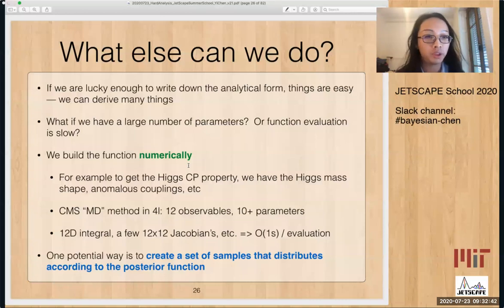For example, if you want to measure the Higgs spin CP property, then we have a lot of parameters to go in. We have the mass, the width, and all the anomalous couplings that we want to get to. And CMS has a MD method in four-leptons analysis. In this method, in this analysis, we have four leptons, each has three momentum, so we have 12 observables. And we have more than 10 parameters in here. And this analysis tried to write down the full likelihood of these 12 dimensions. And what this means is that for each point in the likelihood, we have to do a 12 dimensional integral. And we have to evaluate a few 12 by 12 Jacobians for parameter change and so on, because the integral is not in that frame. And in the end, it turns out to be about one second per evaluation.